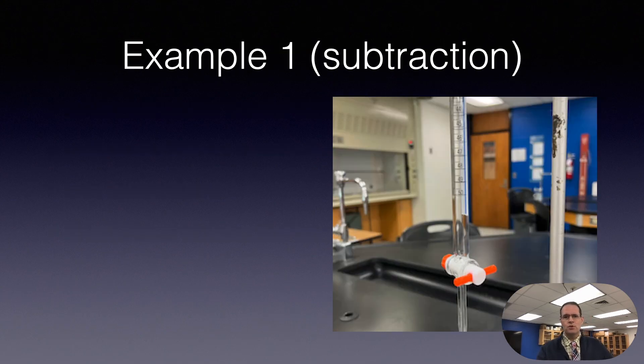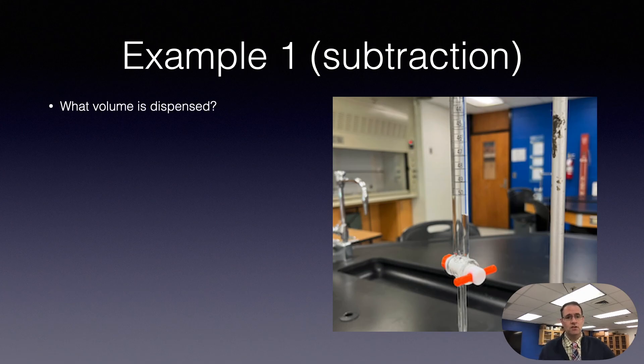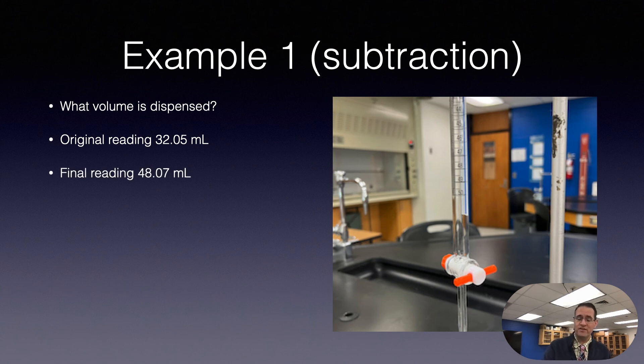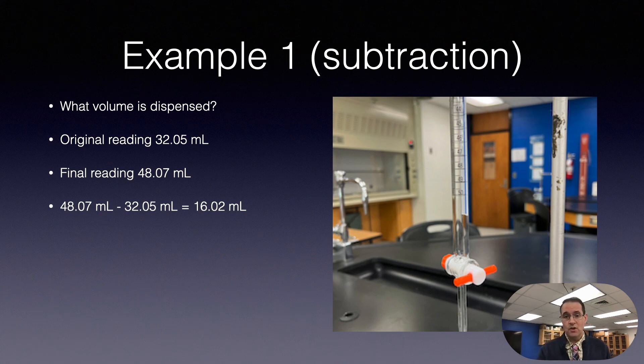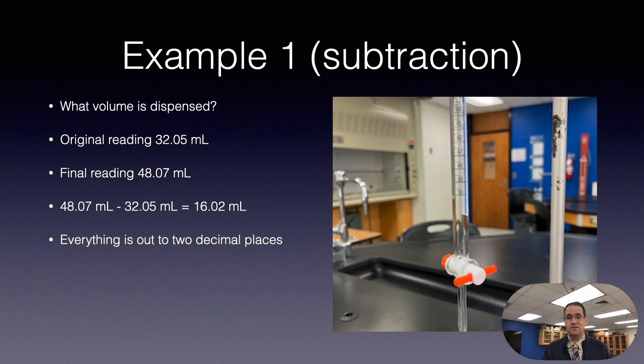Let's consider a subtraction. What volume is dispensed is commonly calculated in chemistry using glassware called a burette. Let's say the original reading is 32.05 and the final reading is 48.07 milliliters. If we do the subtraction here, we get 16.02 milliliters on our calculator. The first volume reading is accurate to two decimal places, the second reading is accurate to two decimal places, and our calculator is giving us an answer to two decimal places. So here we don't need to do anything. Everything is out to two decimal places and we're good to go.